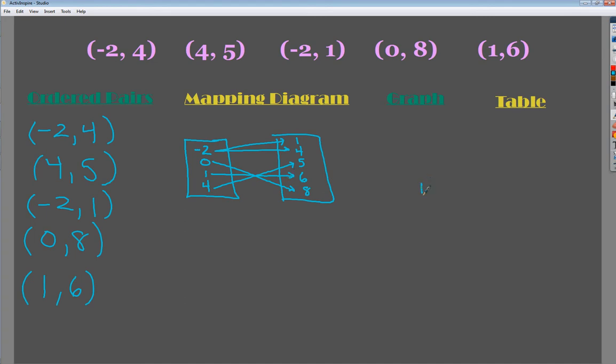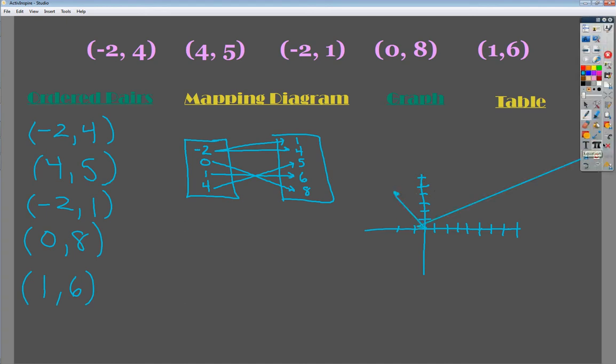Now the next set would be a graph. And I did one on the first page, so it's pretty simple stuff. So my first point is negative 2 and 4. Then I have 4 and 5 here. Negative 2 and 1. 0 and 8. And 1 and 6. So that's kind of what it ends up looking like. Let me erase some of the squiggly lines so it's not as confusing. There we go, that cleans it up a little bit.